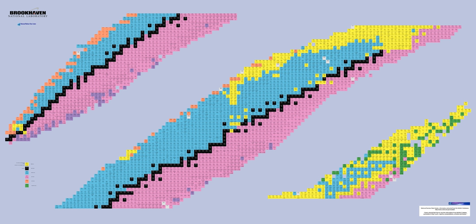Isotopes are nuclides with the same number of protons but differing numbers of neutrons; that is, they have the same atomic number and are therefore the same chemical element. Isotopes neighbor each other vertically — for example, carbon-12, carbon-13, carbon-14, or oxygen-15, oxygen-16, oxygen-17.